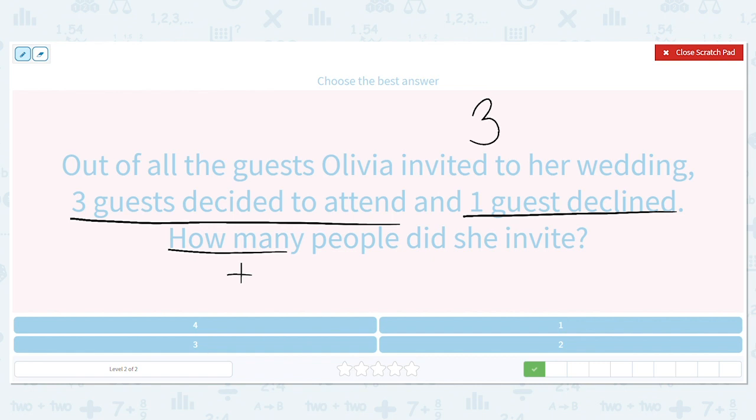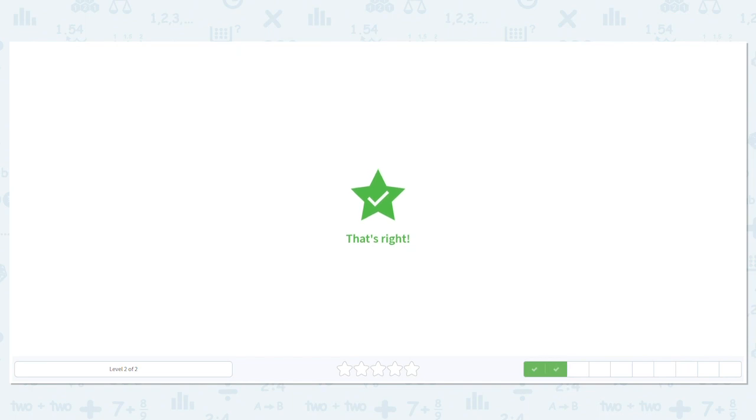So what are we adding? Three plus one equals, comes right after three, four. So four people attended the wedding.